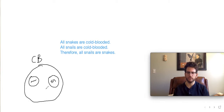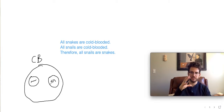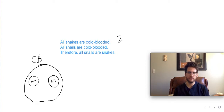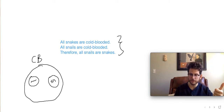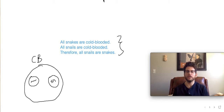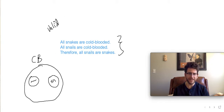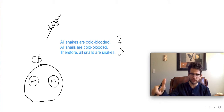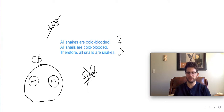The conclusion 'All snails are snakes' — we recognize it's ridiculous — doesn't follow because the two circles do not overlap. They're not organized in a valid way where one nests inside the other. But if we ask whether the statements are true, the answer is actually yes — all snakes are cold-blooded and all snails are cold-blooded. So we have true statements that are not organized in a valid way, meaning it's not a sound argument.